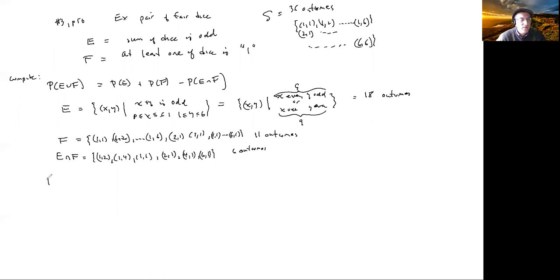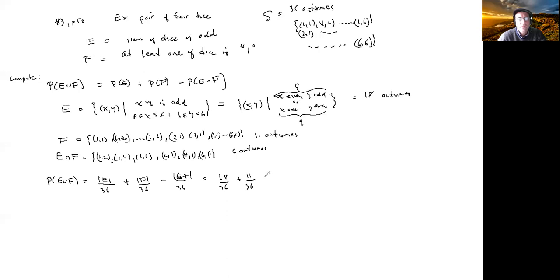So P of E union F equals P(E) plus P(F) minus P(E intersect F), which is 18/36 plus 11/36 minus 6/36. That gives 23 out of 36. So that's the probability of E union F. There are other ways to do this problem, but this is probably the most straightforward.